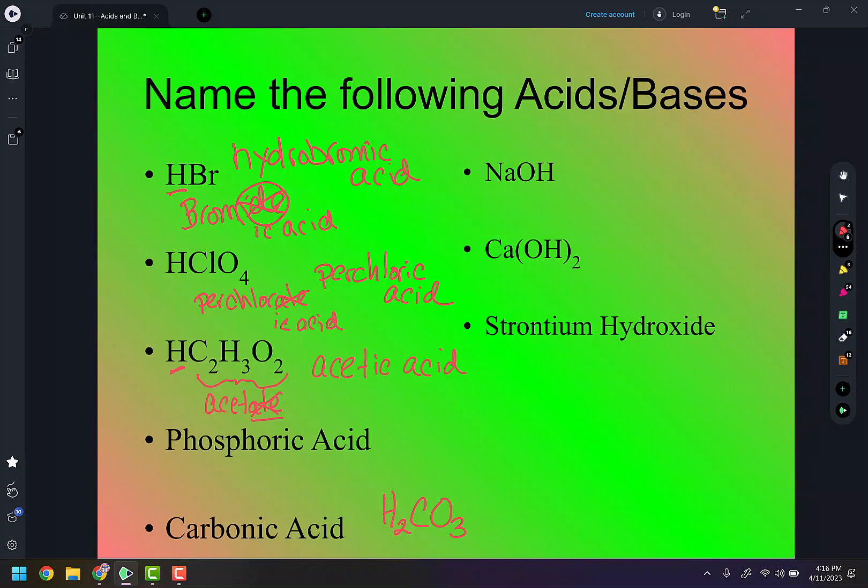Now, phosphoric acid. I don't see a hydro in front. So I know that I'm looking for an -ate, something that has phosphate. And I look up and I see phosphate and phosphate is PO4 with a three minus. I'm going to add my acidic hydrogen to the front of it. So my three is going to come down here and then I'm going to get rid of my charges. So it's H3PO4.